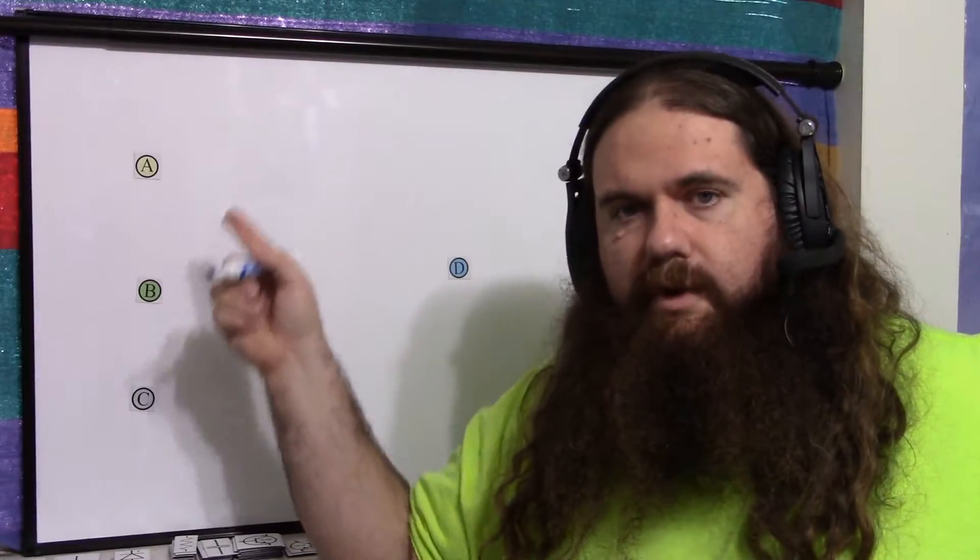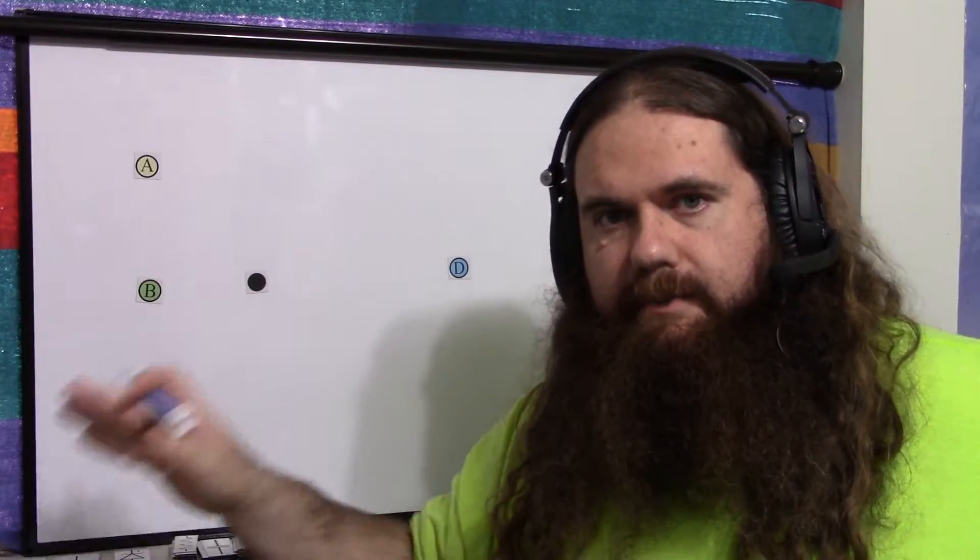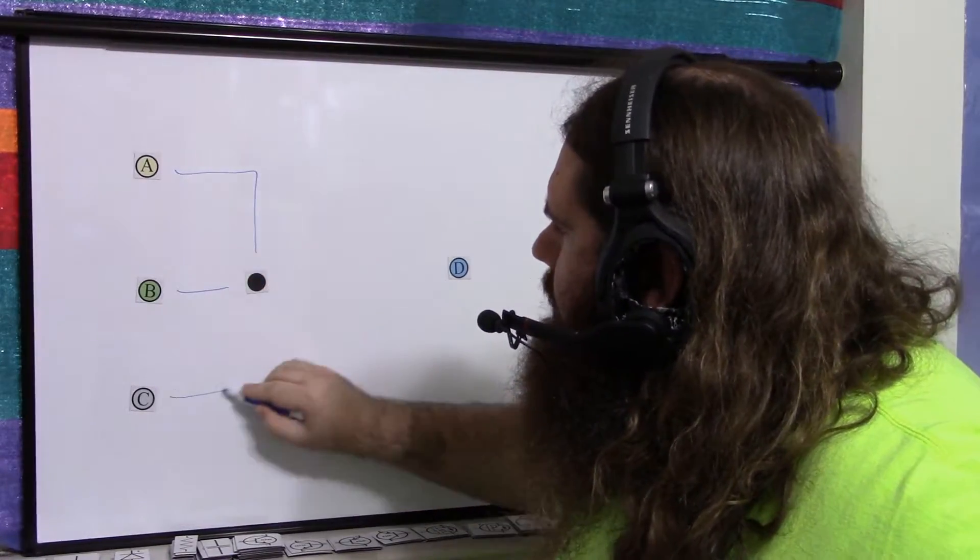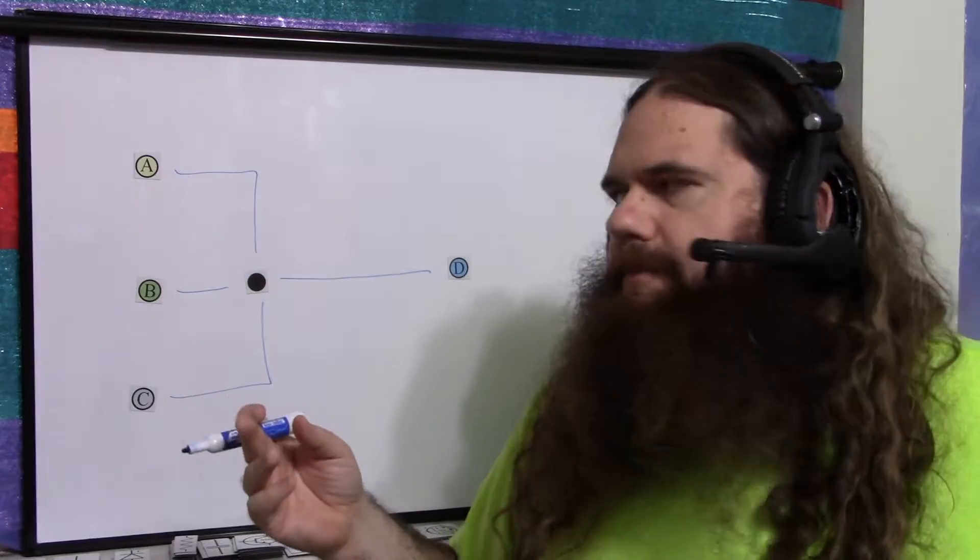But in this case, only one of these is going to be communicating with D at a time. So there's no reason they couldn't share the input pin because only one is going to be doing something at a time.